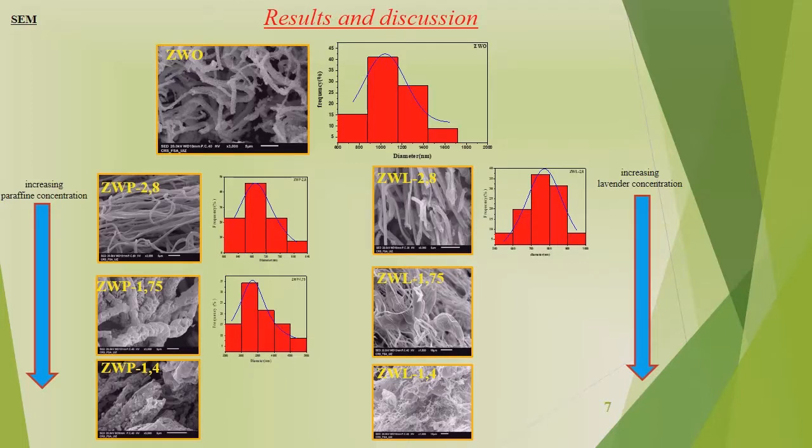By increasing the paraffin concentration, the surface of the tubes becomes more porous and the tubes begin to lose their one-dimensional structure, with diameter ranging from 300 to 3000 nanometers. The distribution becomes non-uniform, which might be due to the aggregation of big droplets of oil before calcination.